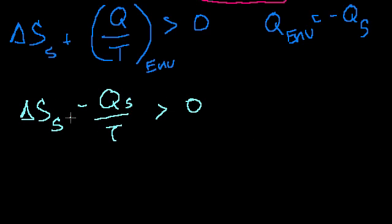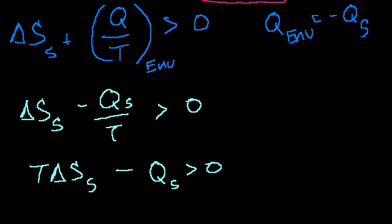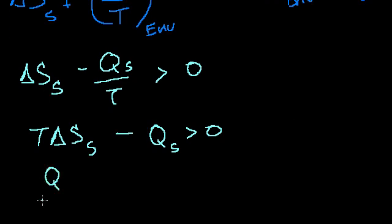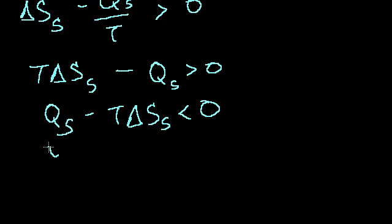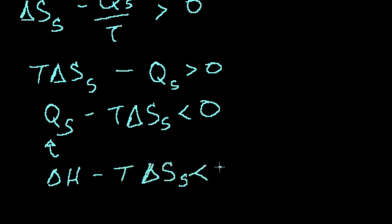And then they multiply both sides of this equation by T, and you get T delta S of the system minus the heat absorbed by the system is greater than 0. You multiply both sides of this by negative 1, and you get the heat absorbed by the system minus the temperature times the change in entropy of the system is less than 0. When you multiply both sides by negative, you switch the signs. And then if you assume constant pressure, this is the change in enthalpy of the system. So you get the change in enthalpy minus the temperature times delta S of the system is less than 0.